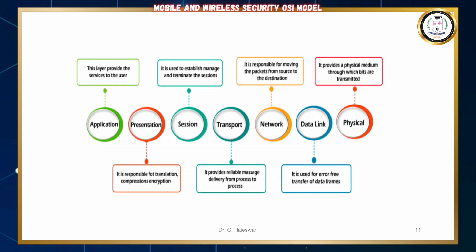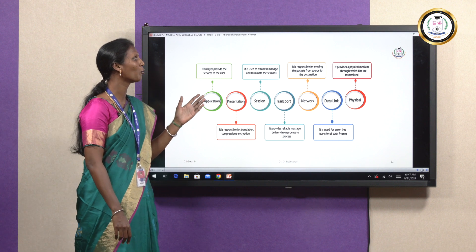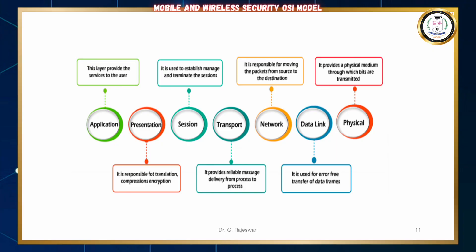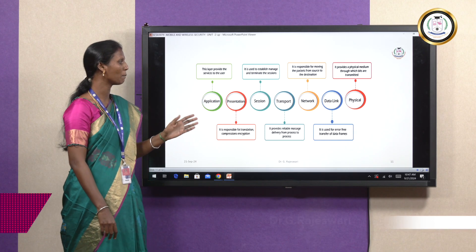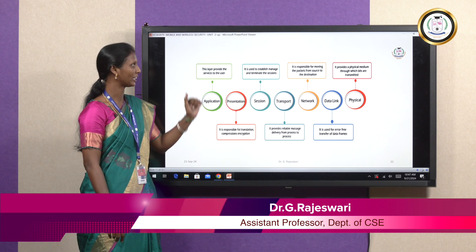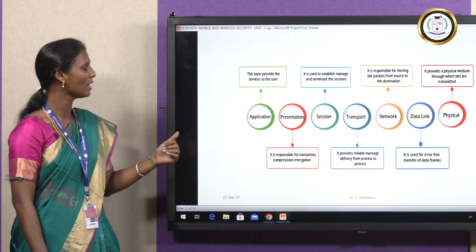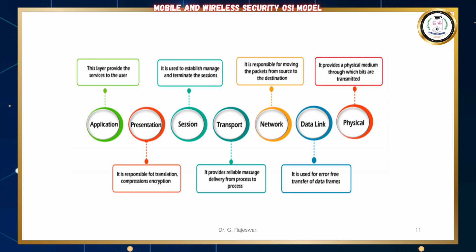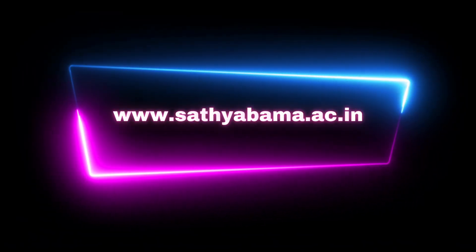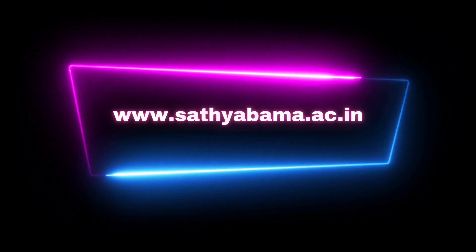These are the seven layers. The overall gist of the seven layers is given in this figure. The physical layer provides a physical medium through which bits are transmitted. The data link layer is used for error-free transfer of data frames. The network layer is responsible for moving packets from source to destination. The transport layer provides reliable message delivery from process to process. The session layer is used to establish, manage, and terminate sessions. The presentation layer is responsible for translation, compression, and encryption. Finally, the application layer provides services to the user. Thank you.